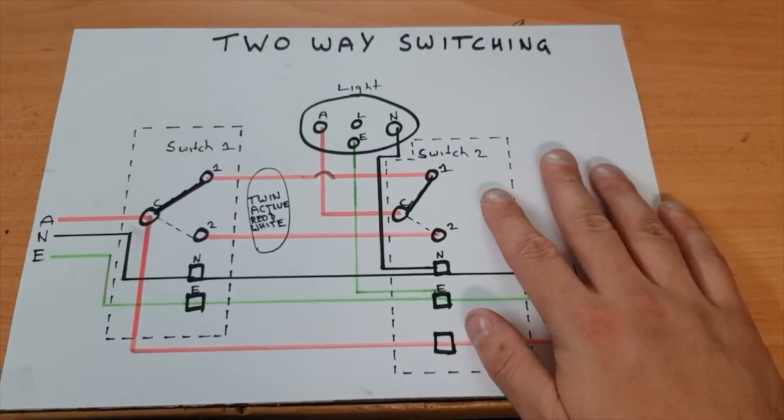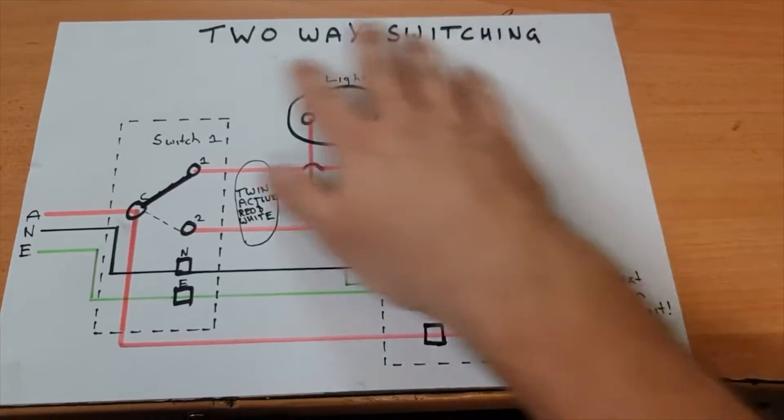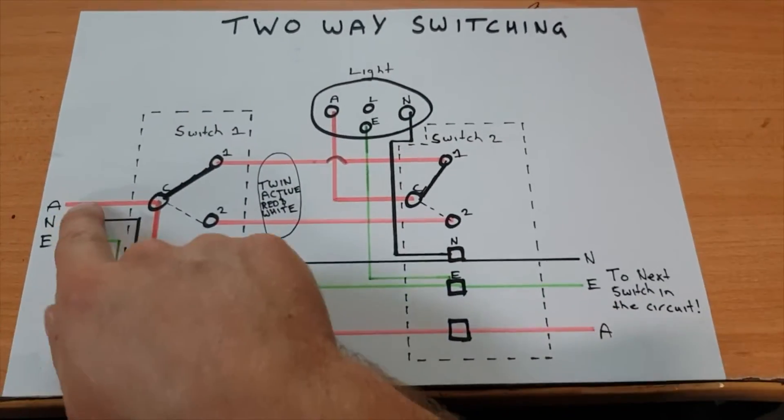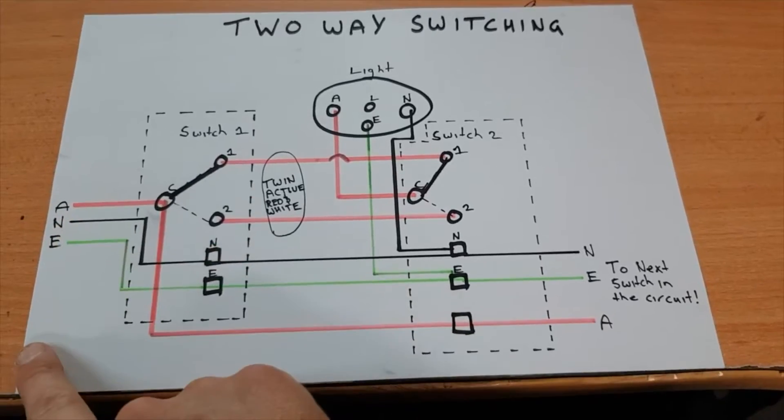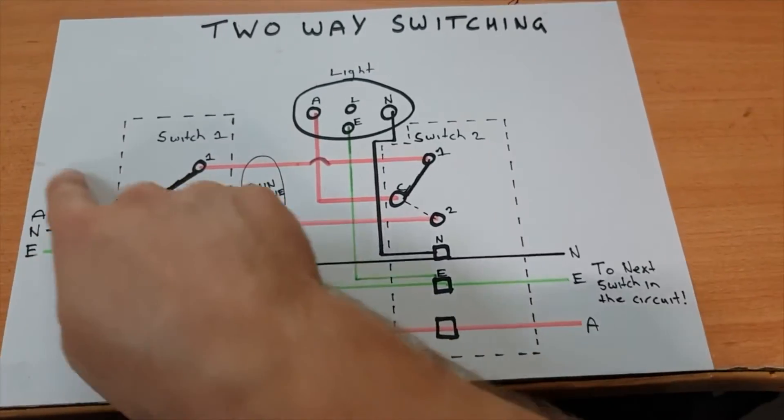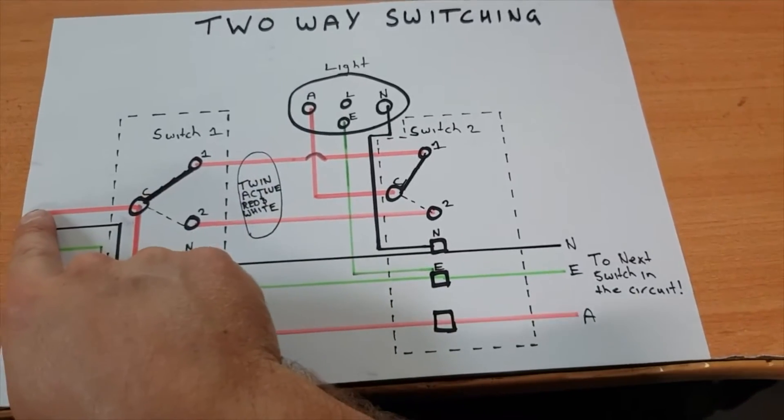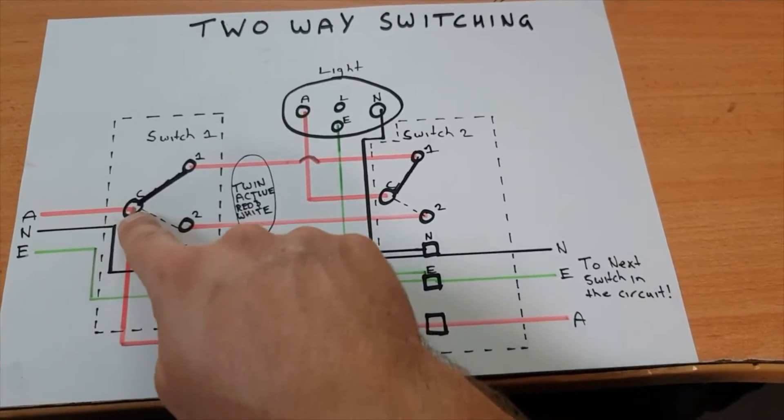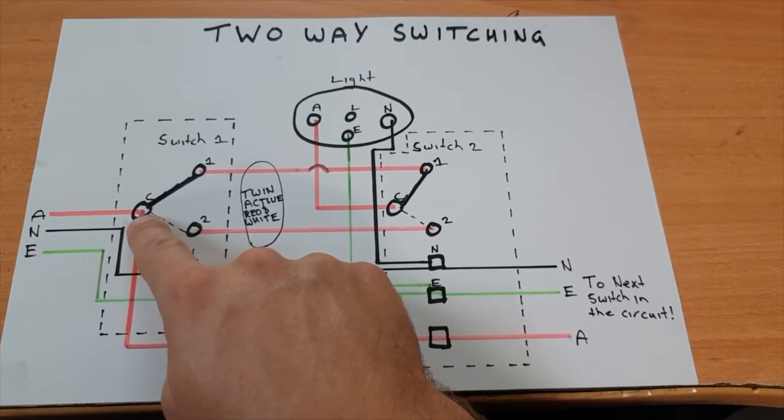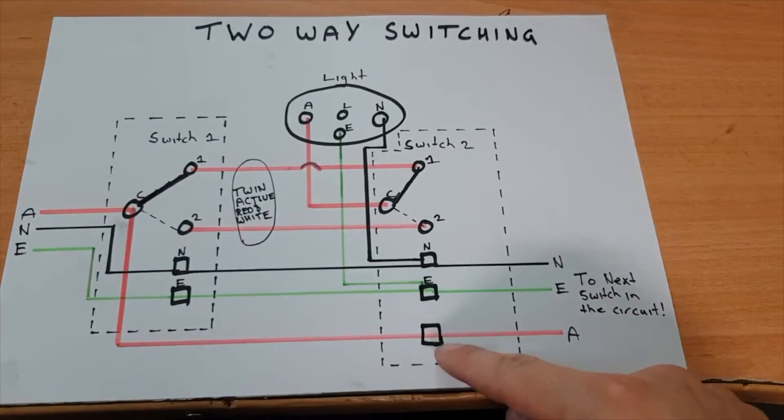In regards to how this all works, I'll explain it now starting with the active. This is your switchboard here and your circuit breakers and stuff like that. It'll come out of your circuit breakers and loop at your first switch here, and then it just loops to your next switch.